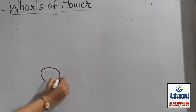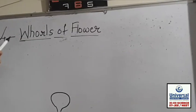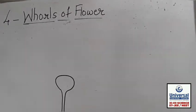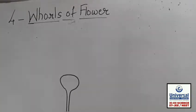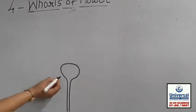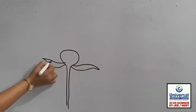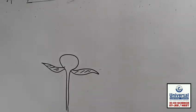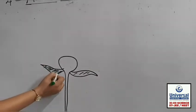Let us draw the thalamus again. As you can see, there are four different layers inside the flower. We will start from the outermost layer. The outermost layer is on the outer side and is green in color.